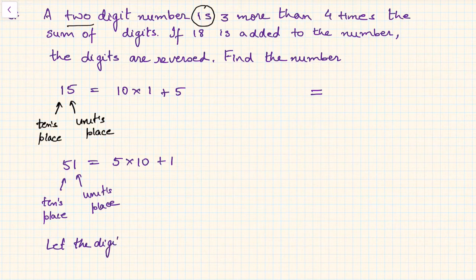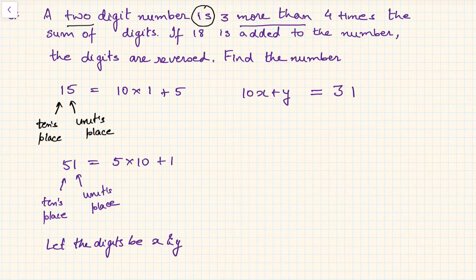So the two digit number will be nothing but 10x plus y. Now this is equal to 3 more than... more than means added to, so 3 and more than is translated as plus, 4 times... so 4 times is into the sum of digits. Sum of digits will be x plus y. This is how I translated an English statement into a mathematical equation.